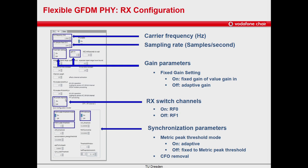The parameter switch channels indicates which channel is used for reception. In our case, we are using RF0 for the transmission and RF1 for the reception. We can also configure synchronization parameters. The synchronization module needs a threshold to determine if synchronization has been found, and this threshold can be fixed or adaptive. We will work with an adaptive threshold so the synchronization algorithm can work properly with different power levels of the received signal. We can also determine whether we want carrier frequency offset compensation or not.